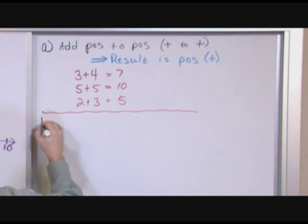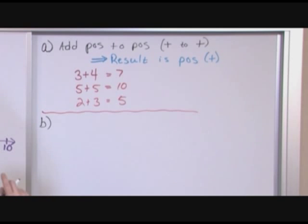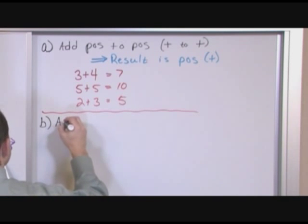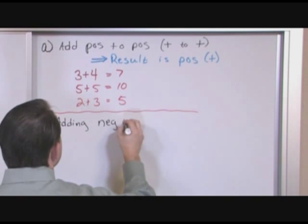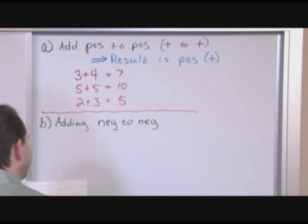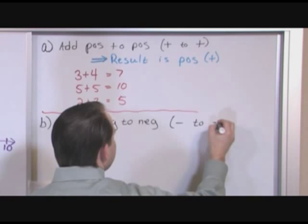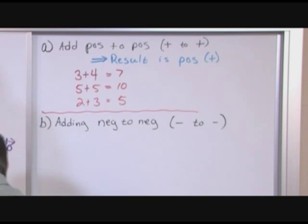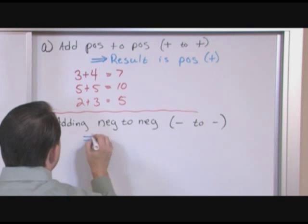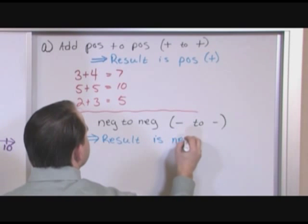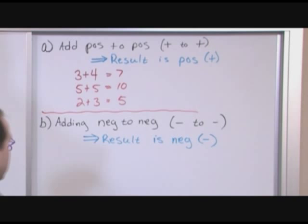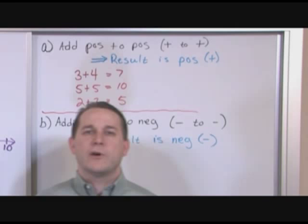Now the next case is a little different from maybe anything you've had to do before, but it's definitely not hard. If you're adding a negative number to a negative number — that is, a negative to a negative — then the result is always negative. Negative plus negative is always going to give you a negative.